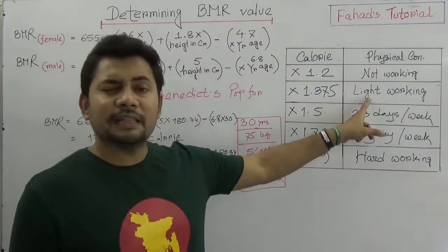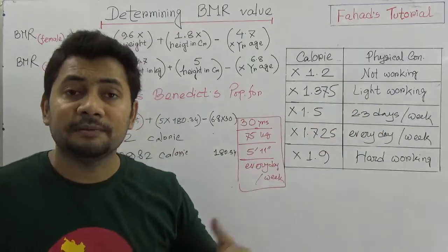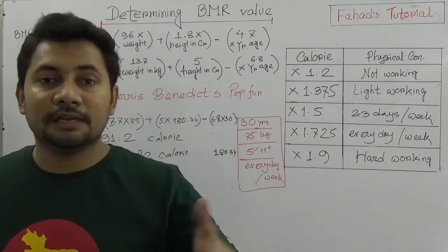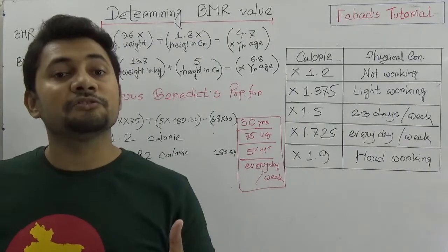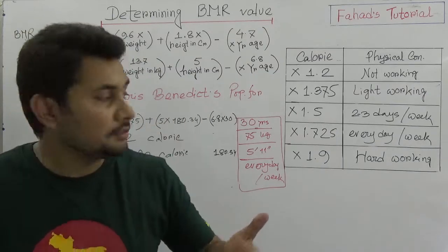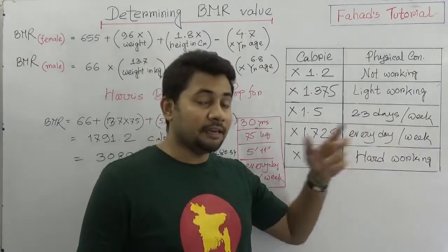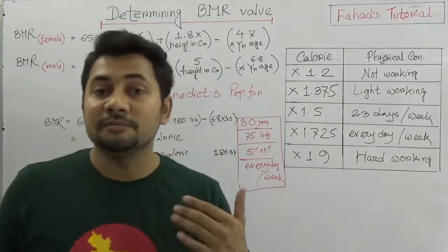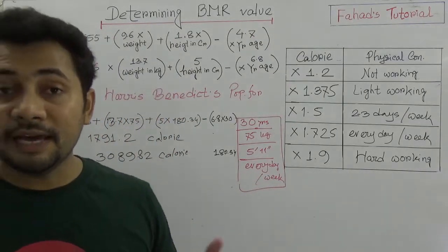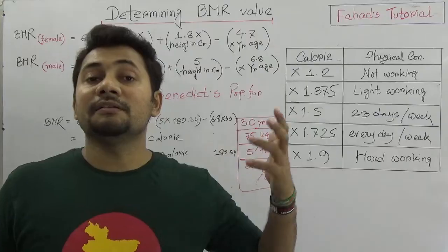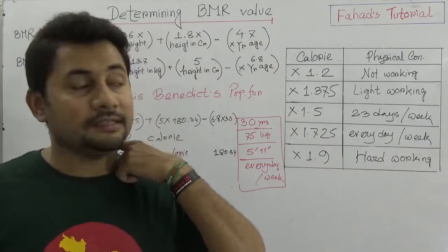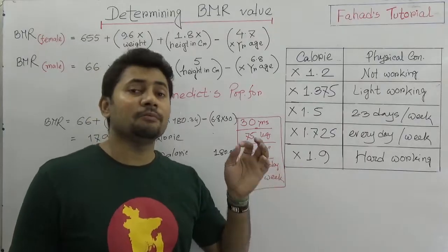If someone is a moderate worker then we need to multiply by 1.5. If the work is every day — daily active — then multiply by 1.725. But in case of athletes or those people who are really hard working, doing intense work every day, then the BMR should be multiplied by 1.9 or 2.